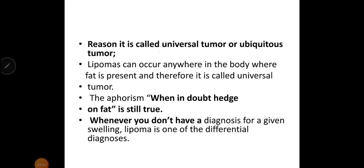There is a reason lipoma is called a universal or ubiquitous tumor: it can occur anywhere in the body where fat is present, and therefore it is called a universal tumor. Whenever we don't have a diagnosis for a given swelling, lipoma is one of the differential diagnoses.